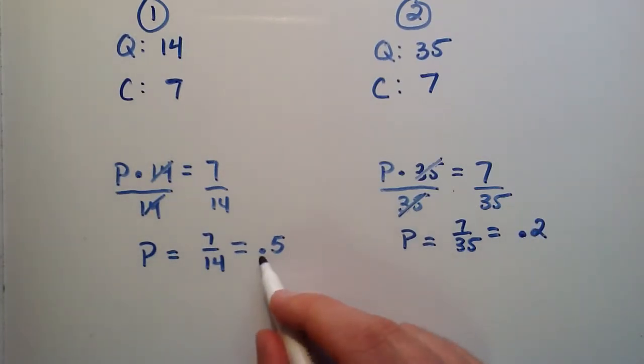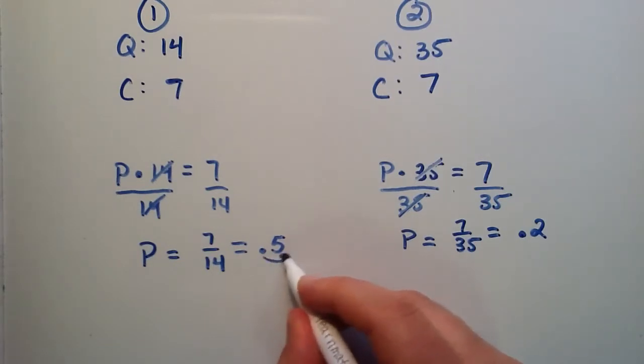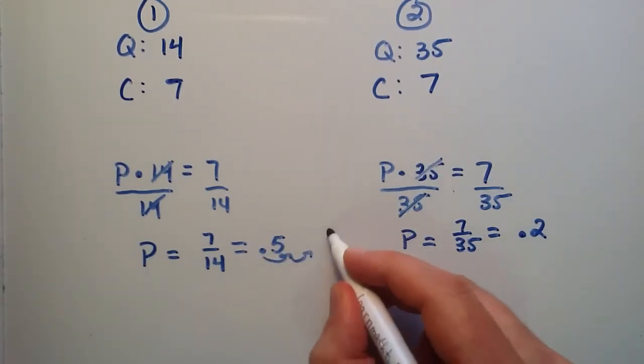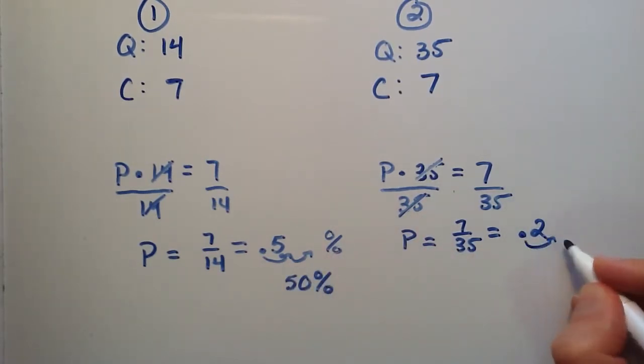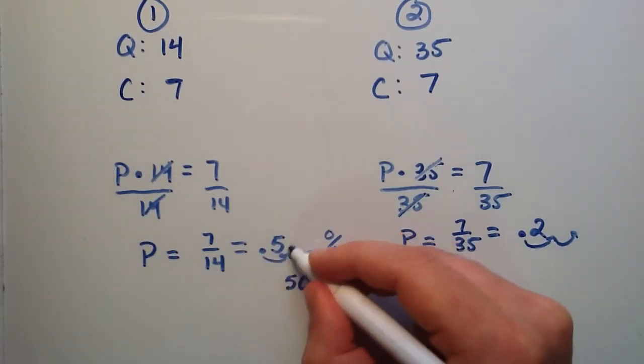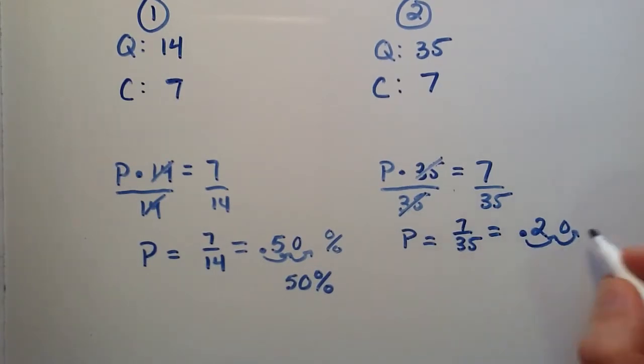So shifting this decimal place two units to the right and then adding a percentage sign gives us the answer 50%. And in this case shifting it two units to the right, because when we shift it we add a 0 here, gives us 20%.